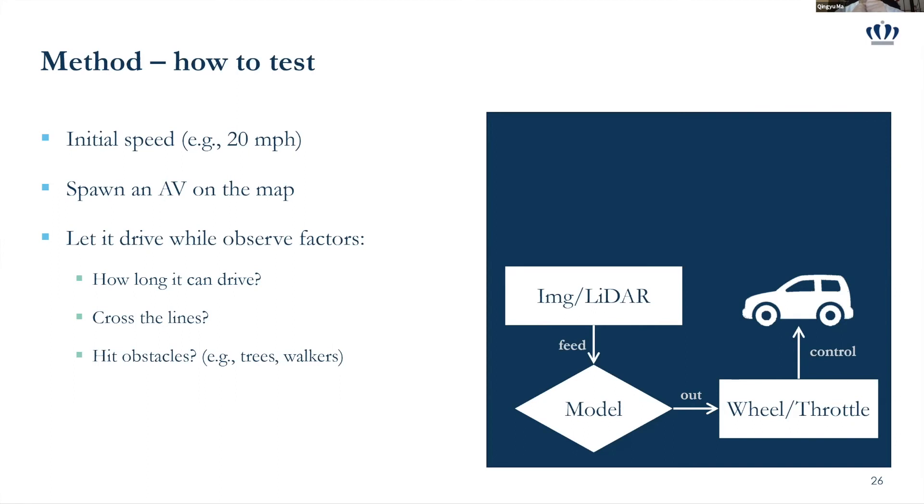And after that, how I did the test. I set an initial speed, like 20 mph and a small AV somewhere on the map and just let it run. And the vehicle will start a trip and it may cross some lines. That's fine. And it may do something well. That's also fine. And eventually it will hit something. Usually either some obstacles. And that's the end of the trip.